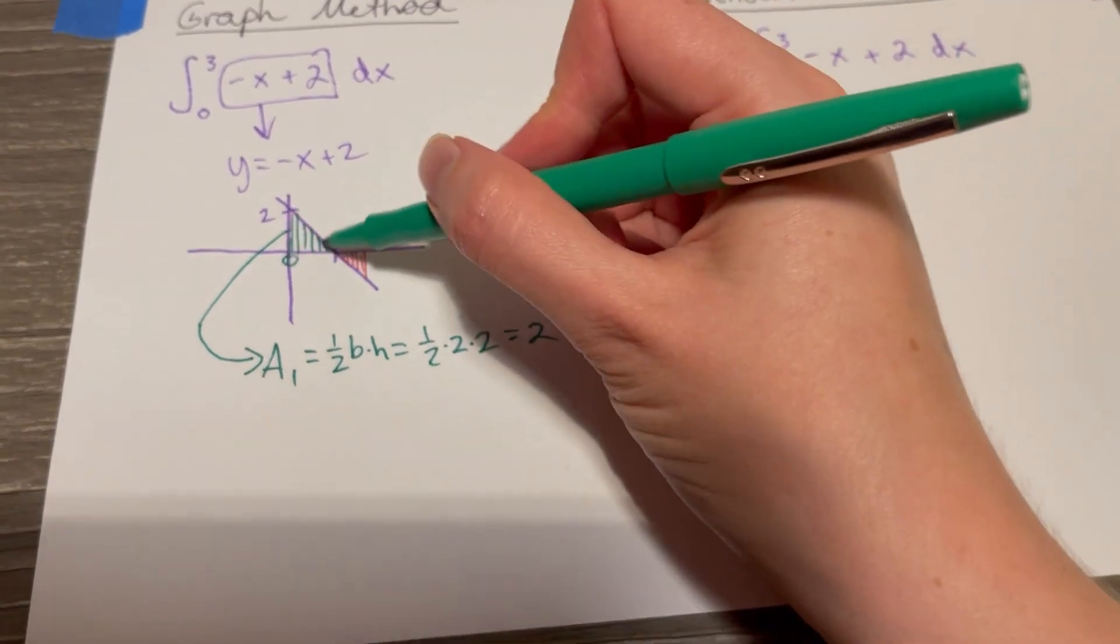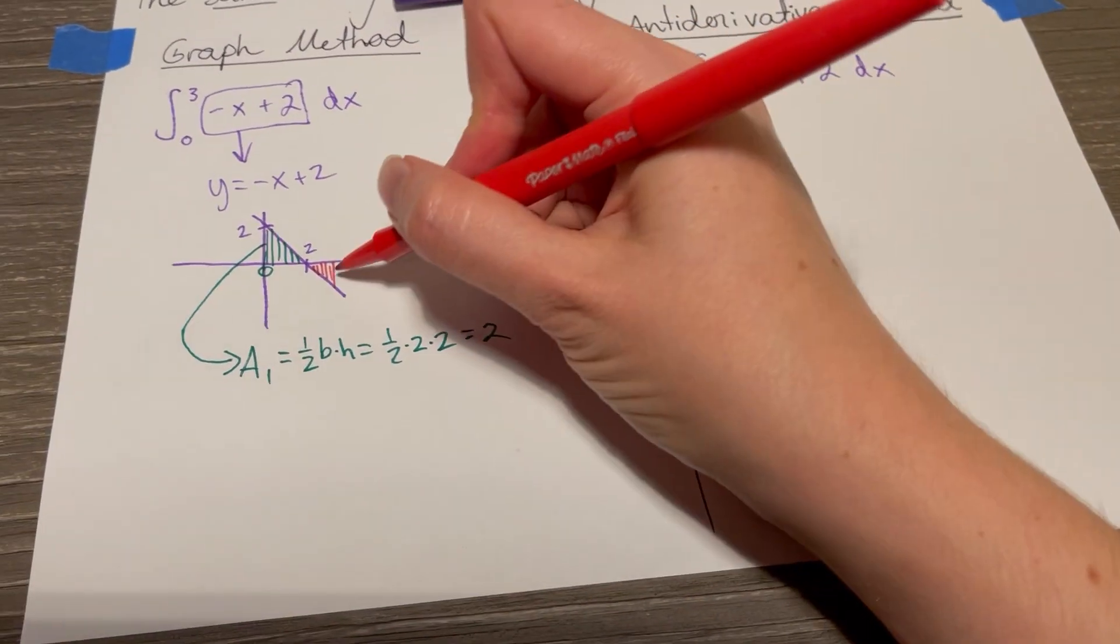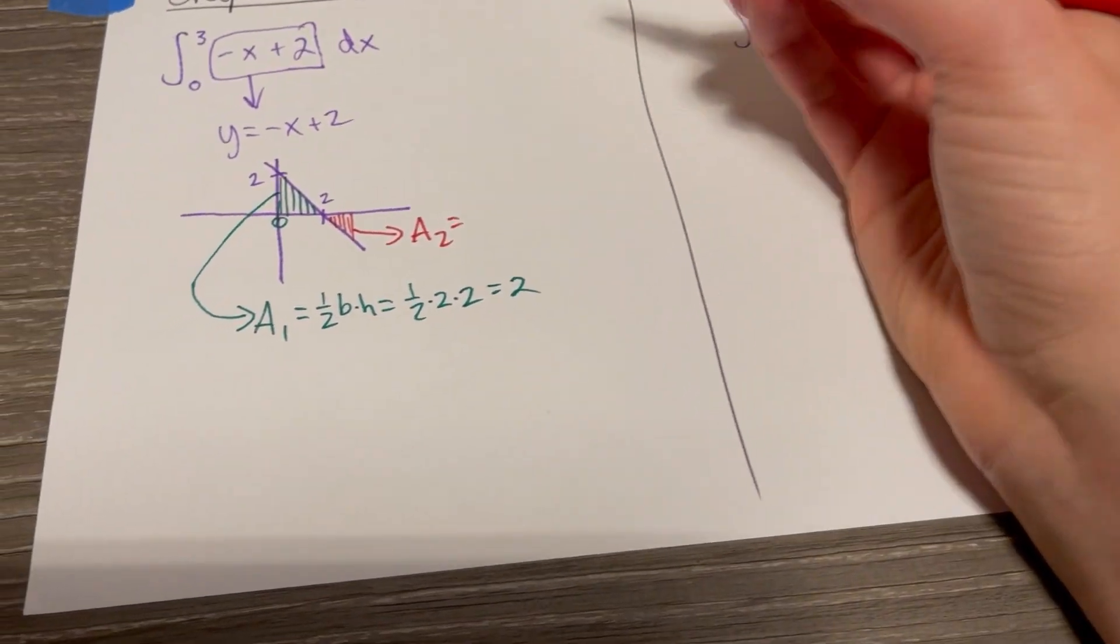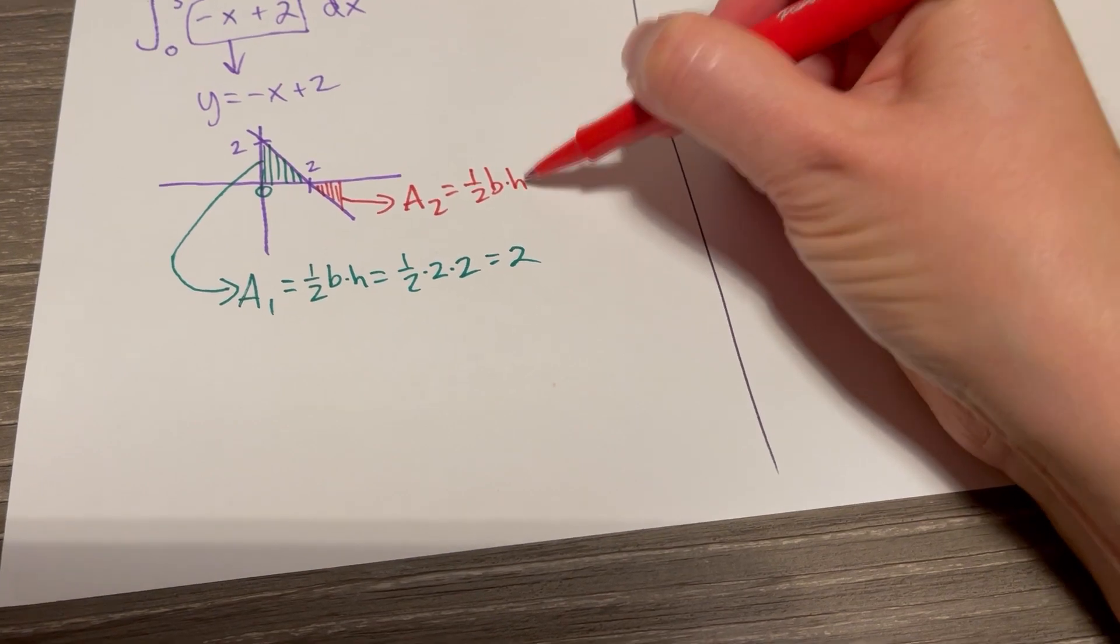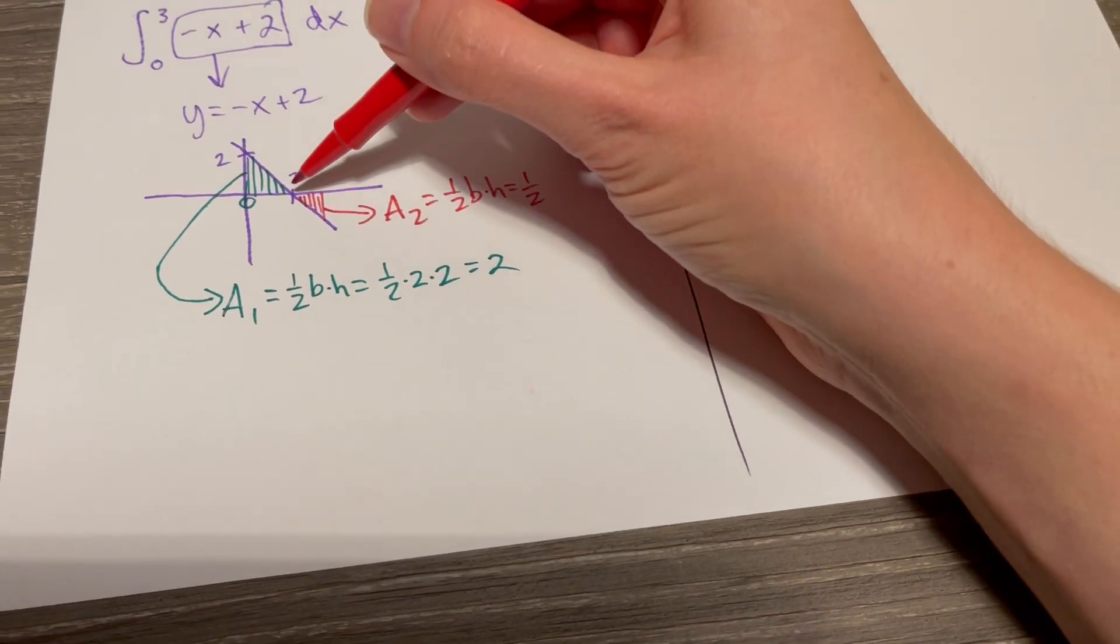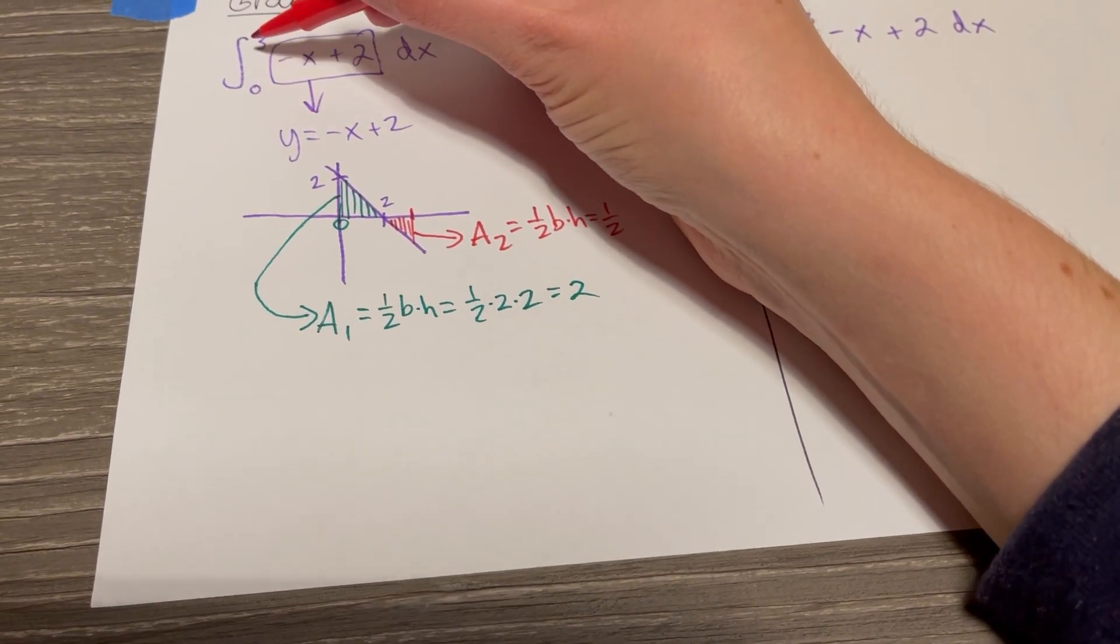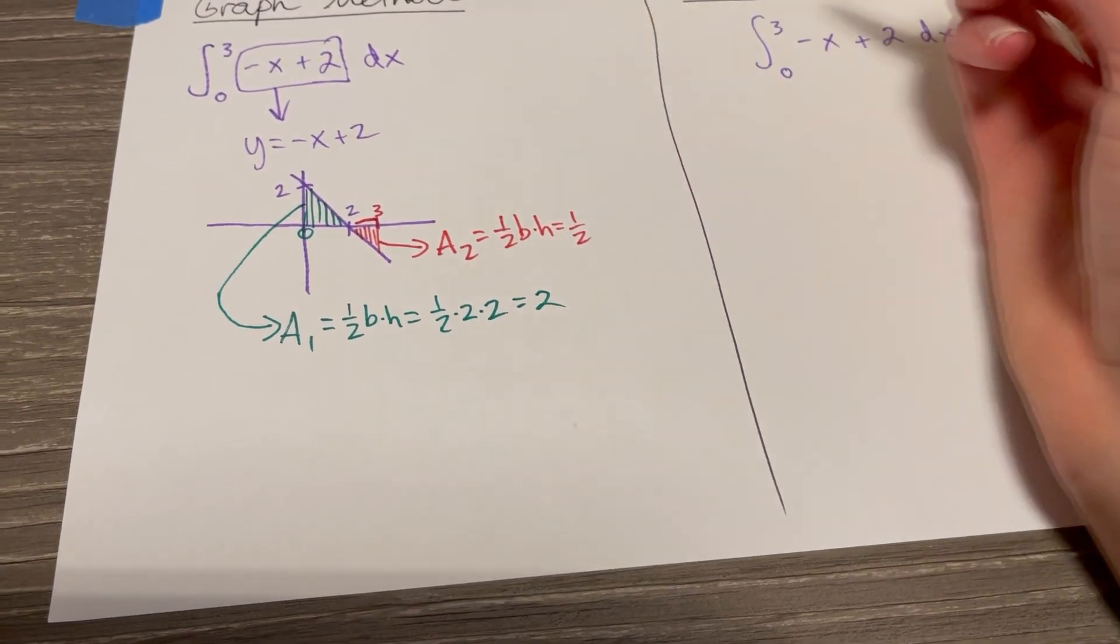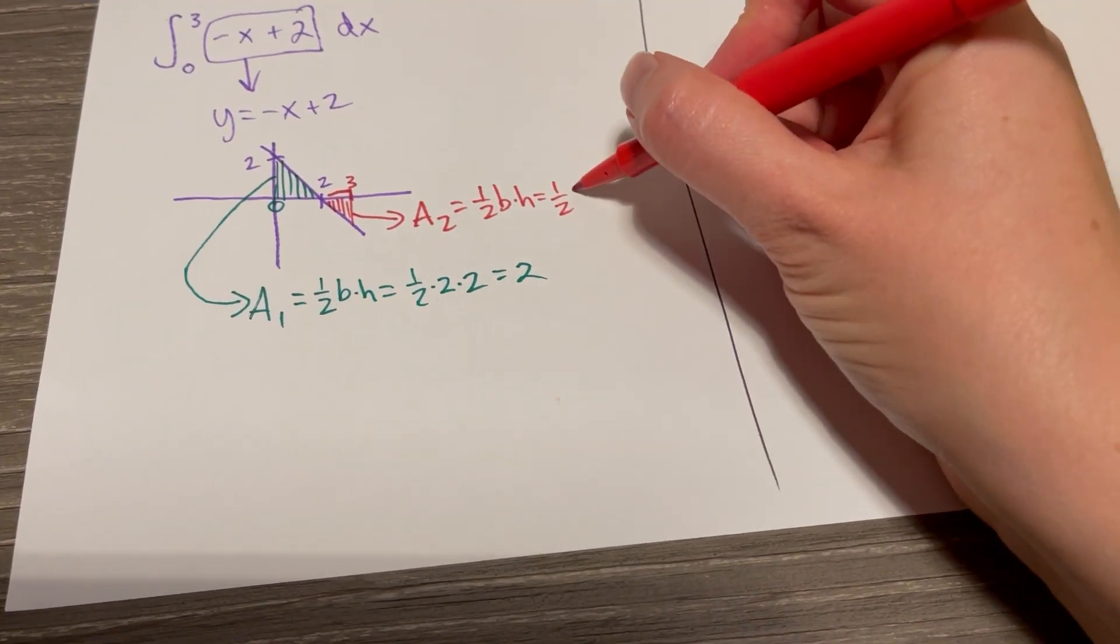So the positive area will be positive two, and then we have to find this area that's going to end up counting as negative because it's below the x-axis. One half base times height, one half. The base distance, we're only taking the integral from zero to three, so we're stopping at three, so this base distance of the red triangle is only one, from two to three, so one.